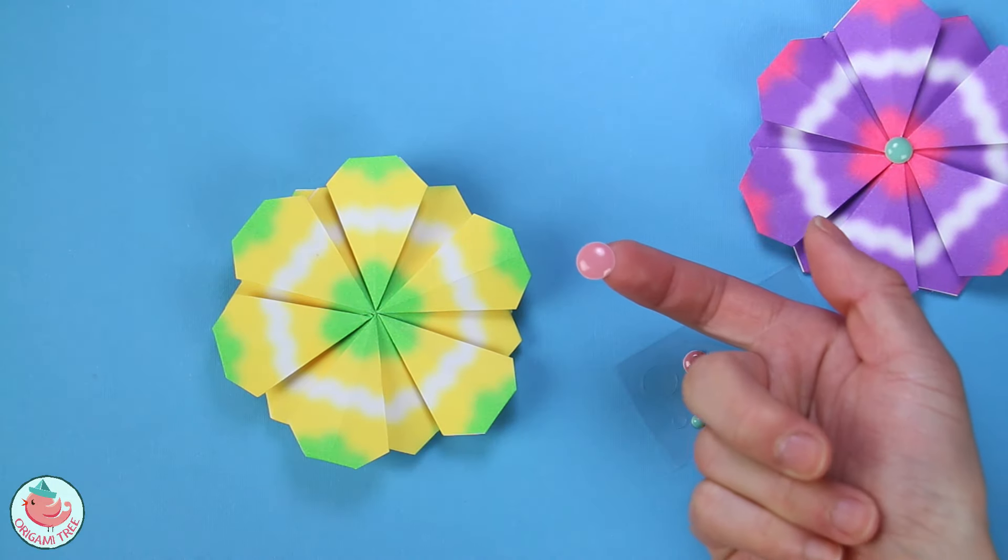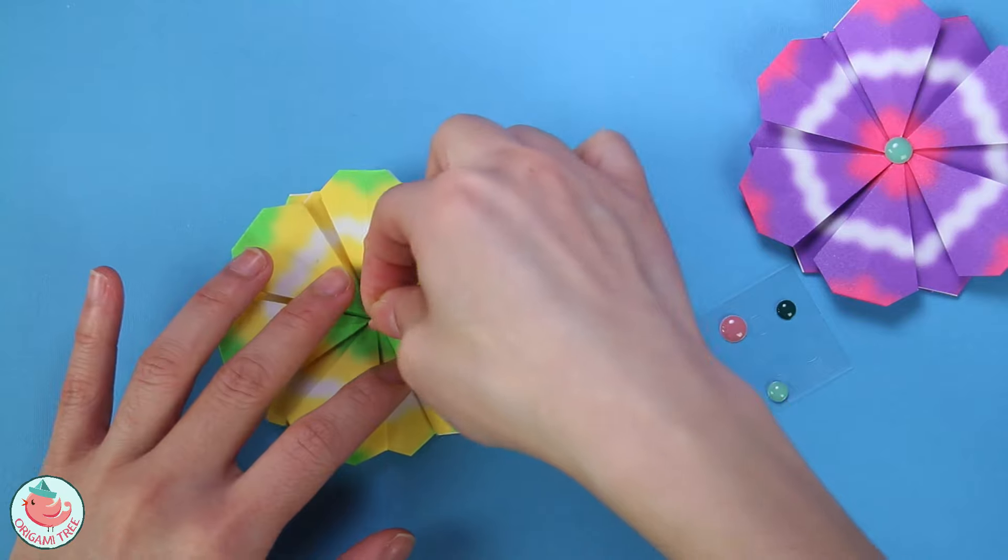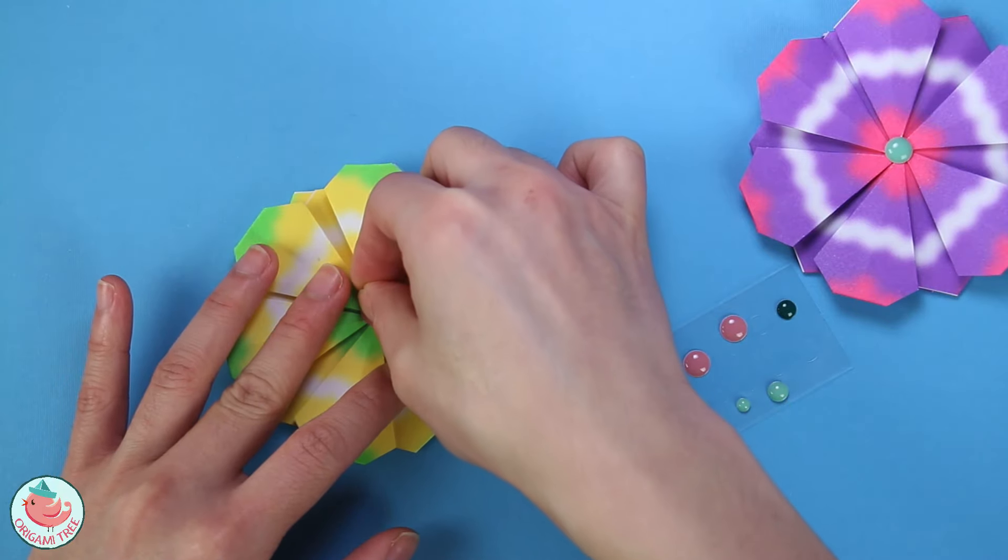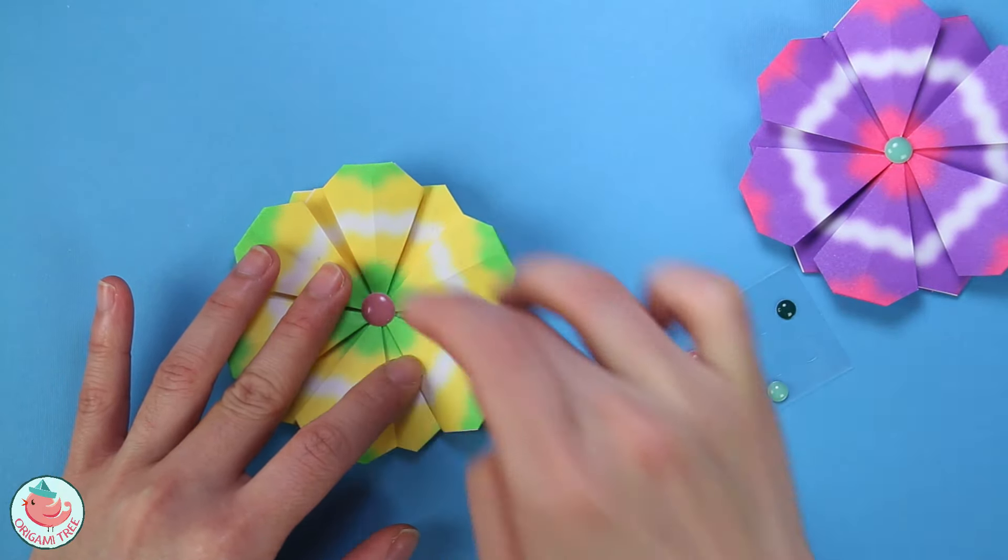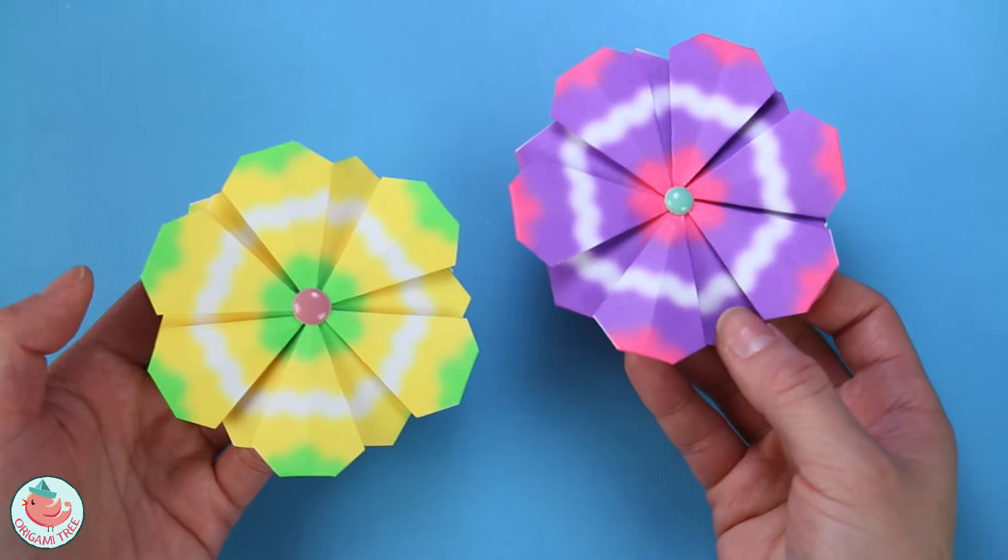And now to add the finishing touch, you're just going to place a round sticker right at the center, or you can use a button. And your paper flower is complete.